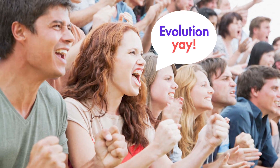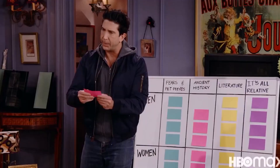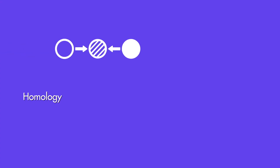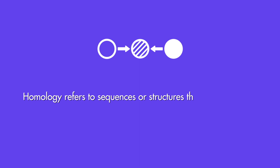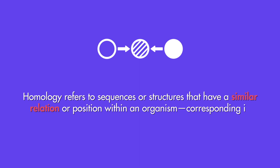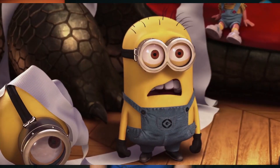While lay people who argue for evolution in everyday discussions may not know the term homology, they constantly refer to this concept in making their case. The technical definition of homology is essentially sequences or structures that have a similar relation or position within an organism, corresponding in structure and in origin, but not necessarily in function. This reflects the fact that biologists often have difficulty determining whether two structures or genetic sequences are homologous.